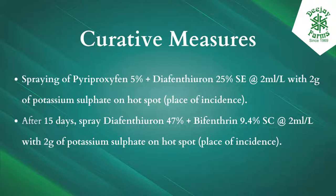Curative measures: spray pyroproxafine 5% plus diaphentheurone 25% at 2 ml/L with 2 grams of potassium sulfate on hot spot places of incidence. After 15 days, spray diaphentheurone 47% plus bifenthrin 9.4% SC.